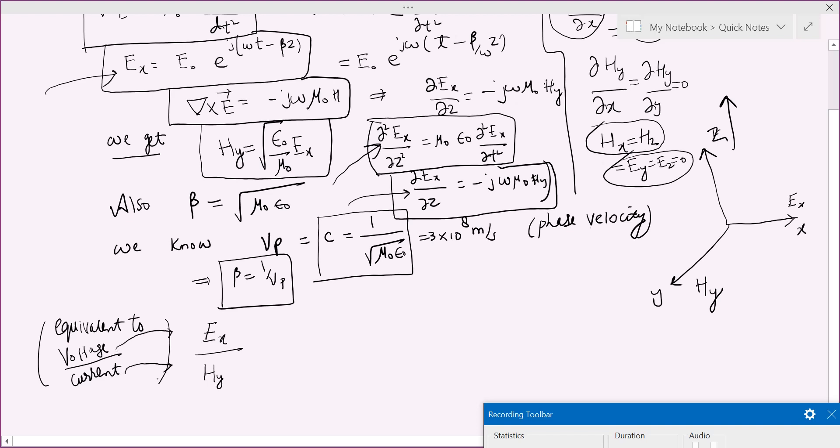Because voltage is related to electric field and current is related to magnetic field intensity. And we already have derived H_y is under root of epsilon naught by mu naught E_x. So E_x by H_y will be simply under root of mu naught by epsilon naught, and it has a special symbol as well as name. It's called intrinsic impedance, intrinsic impedance of free space.